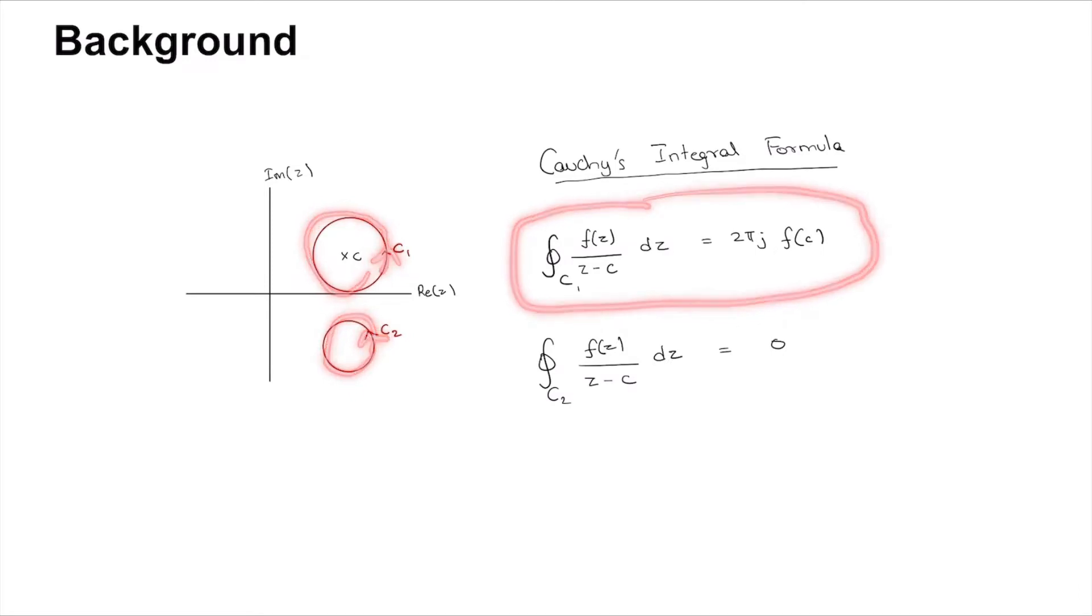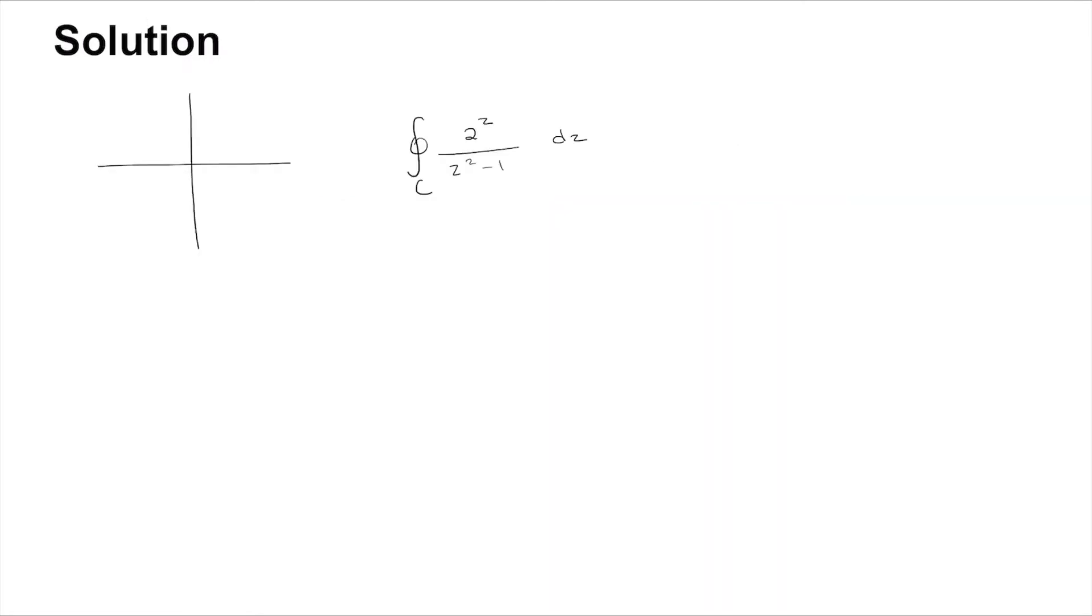So we have poles at -1 and +1. Let us split the denominator as (z - 1)(z + 1) dz. So there are two poles: one at (-1, 0) and one at (1, 0). This of course is the complex plane with the real part of z on the x-axis and imaginary part of z on the y-axis.